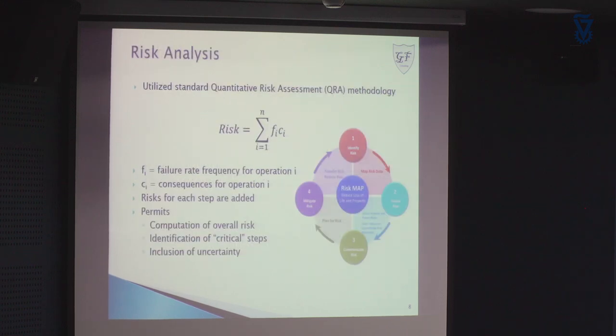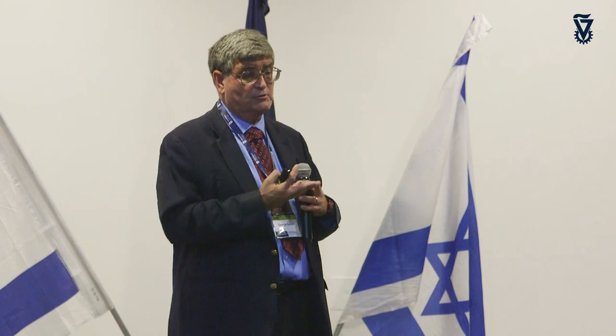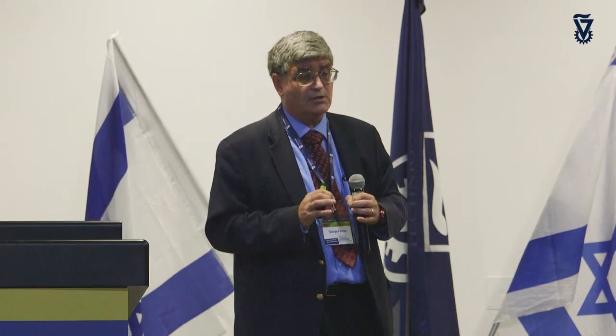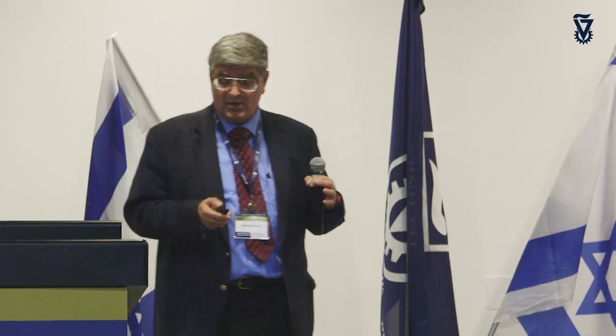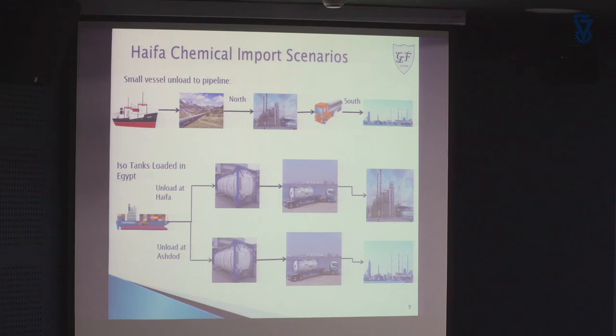Then we take consequences and frequency together, using the basic equation that risk is basically the product of the frequency and the consequence for a given operation, and sum those individual risk components to get the entire process risk. We're going to be considering only the risk estimation steps — not risk communication or mitigation today. We're not including uncertainty, but the way we've done the calculations, we could throw uncertainty in relatively easily.